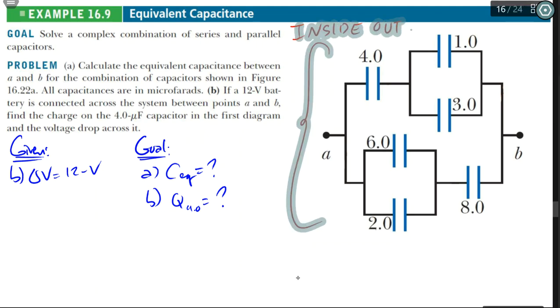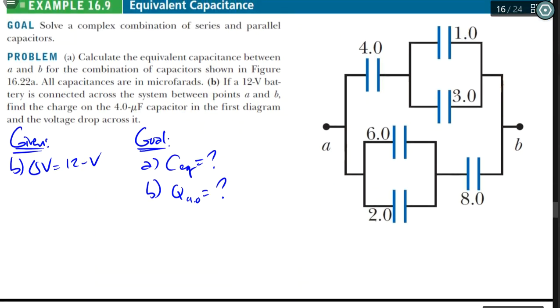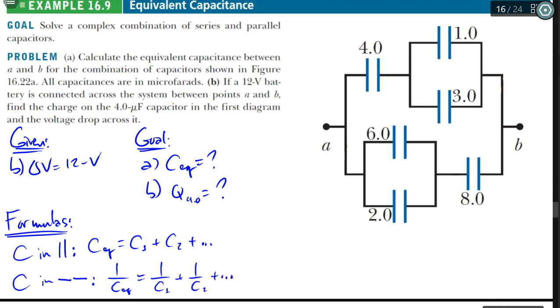I'm going to erase this because I'm going to use this diagram. Like I said, we're going to start from the inside out, and I'm going to flip back and forth. Now, we're going to need our formulas, and I'm going to write them in a generic way. For capacitors in parallel, it's just simply C1 plus C2 plus dot dot dot. But capacitors in series is the reciprocal of the sum of the reciprocals, if you see my other example.